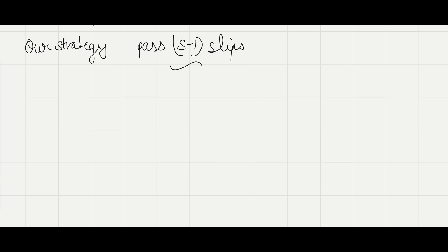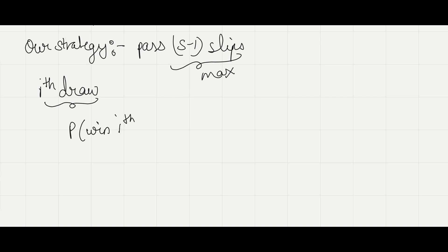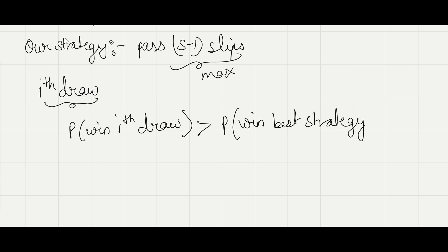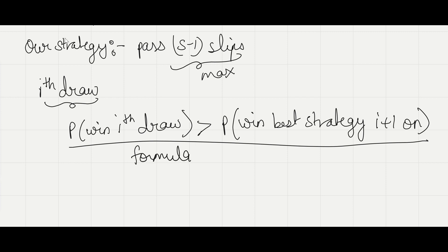Our strategy is: pass the first s−1 slips, then choose the first slip that is greater than the maximum of those s−1 slips. More precisely, at the i-th draw, we choose the candidate at draw i if the probability of winning at that draw is greater than the probability of winning with the best strategy from draw i+1 onward. This is our strategy and our formula.